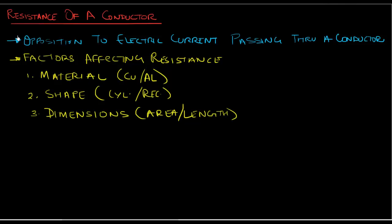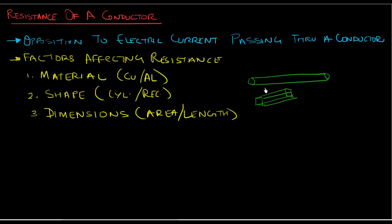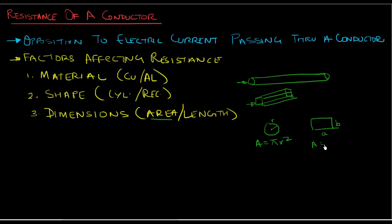Let's see why these factors are important. Starting with shape and dimensions: the shape could be cylindrical or rectangular. The shape is important because it gives us the cross-sectional area. For a cylindrical conductor, the cross-sectional area is πr², whereas for a rectangular conductor with dimensions a and b, the area is a times b.